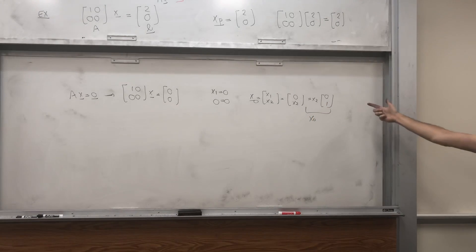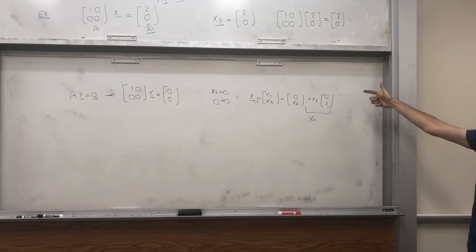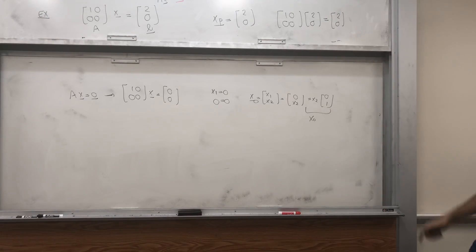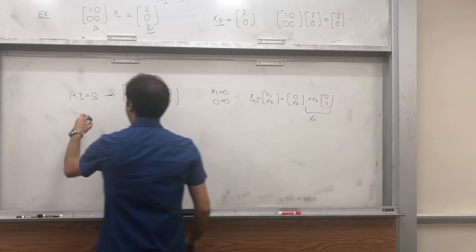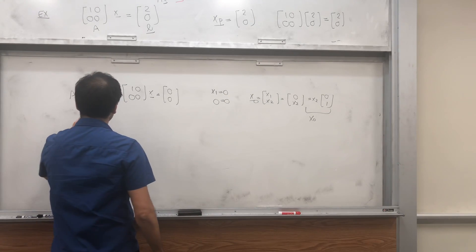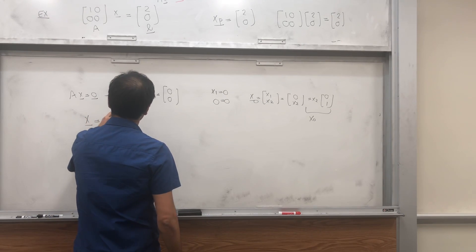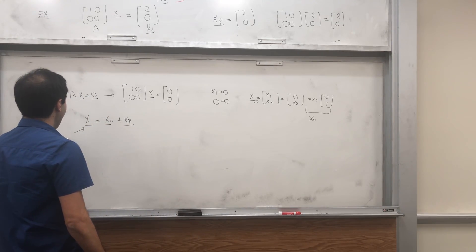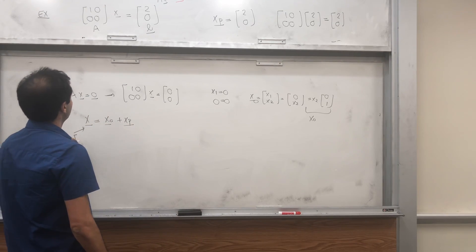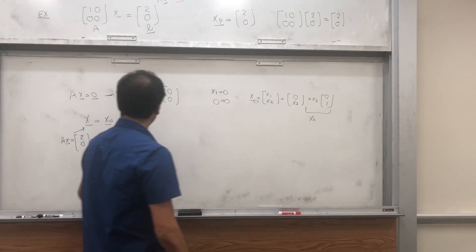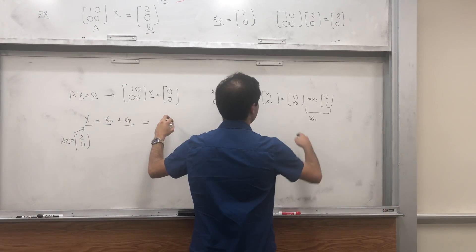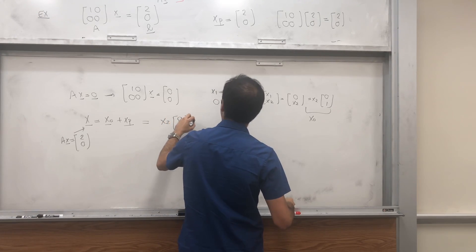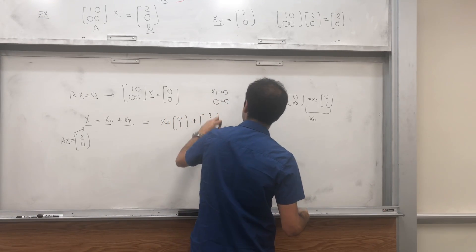Namely, x0 is the set of multiples of the vector [0; 1]. And then this theorem tells us that x equals x0 plus xp. So to solve Ax equals [2; 0], the solution is x2 times [0; 1] plus the particular solution [2; 0].